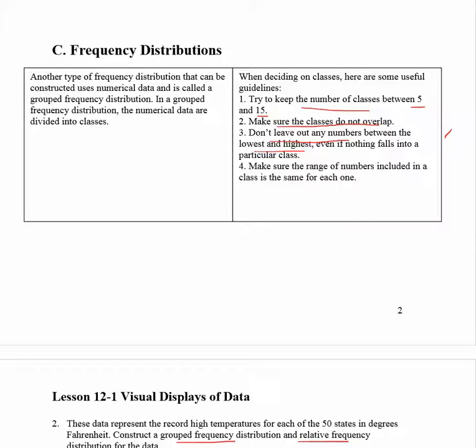Make sure the range of numbers included in each class is the same for each one. So for instance, if you had a class that went from 20 to 30, your next class would have to start at 31 and it would also have to go up by 10. So it would go from 31 to 41. Then you would have 42 to 52. So be consistent with the range of numbers in each class and always start at the next number.